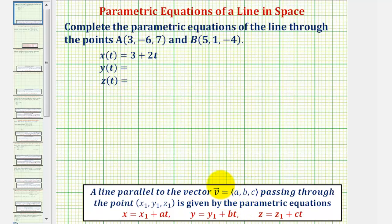Notice how if we can find the direction vector, the components of the direction vector a, b, and c give us the coefficients of the variable t, which is the independent variable.